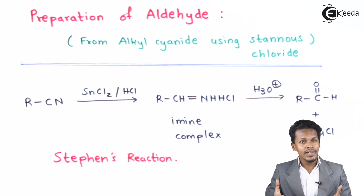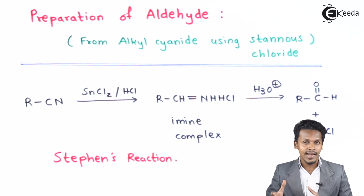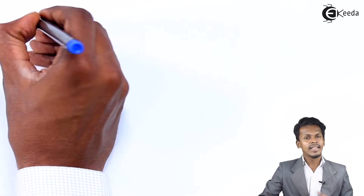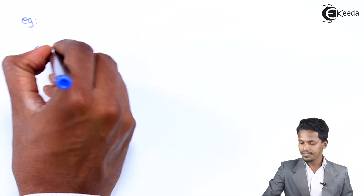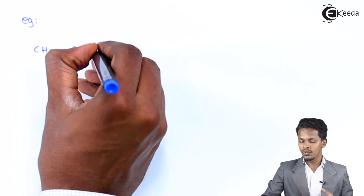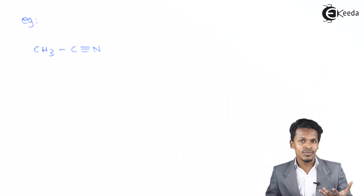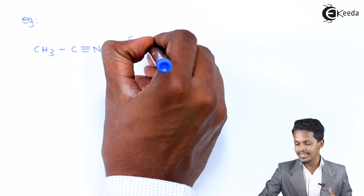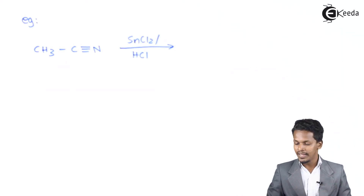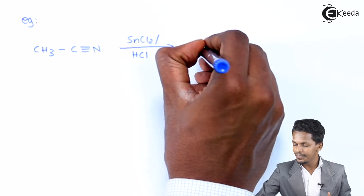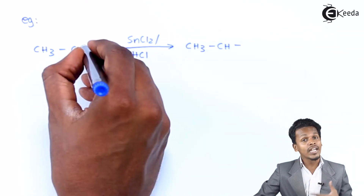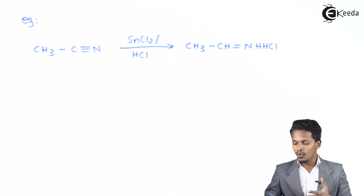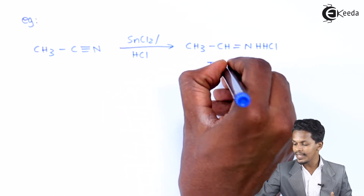Let me discuss a few examples. Suppose we consider CH₃CN, which is basically known as methyl cyanide or acetonitrile. When acetonitrile undergoes a reaction with stannous chloride (SnCl₂) along with a dilute solution of HCl, the product formed is CH₃-CH=NH·HCl. The name of this product is the imine complex.